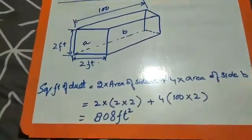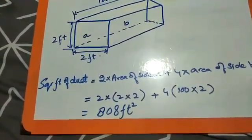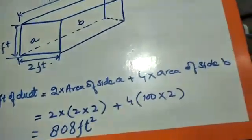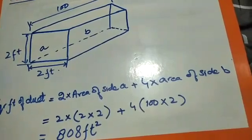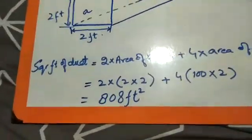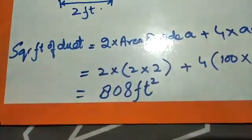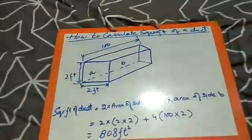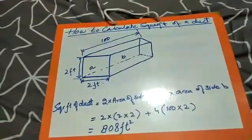Putting the values: 2 multiplied by area of side A, which is 2 feet by 2 feet, plus 4 times the area of side B, which is 100 by 2 feet. So the square feet of duct will be 808 square feet. This was a simple technique for calculating the square feet of a square duct.